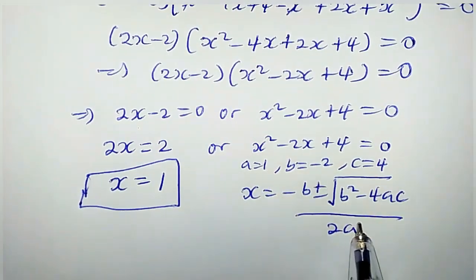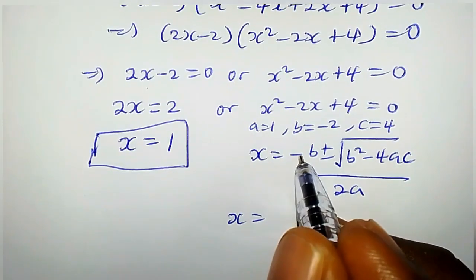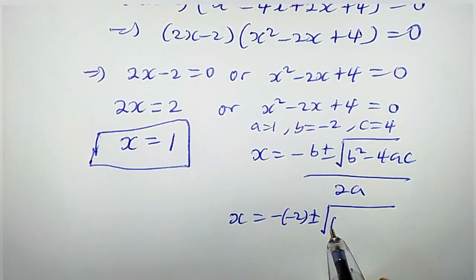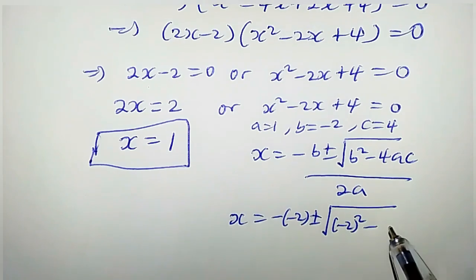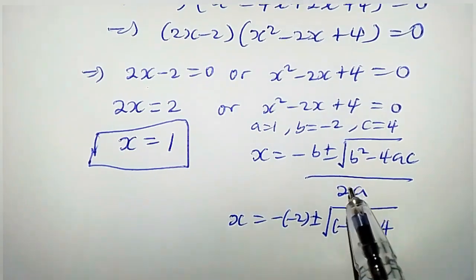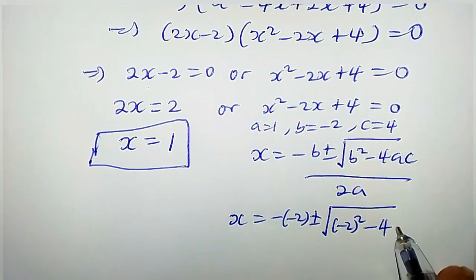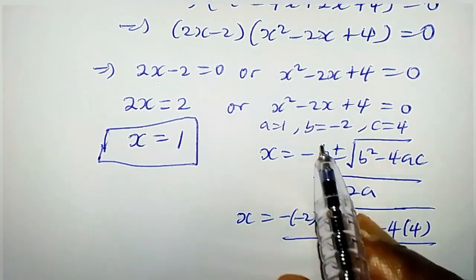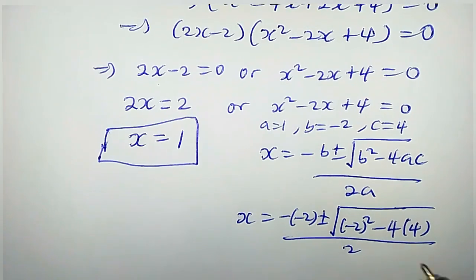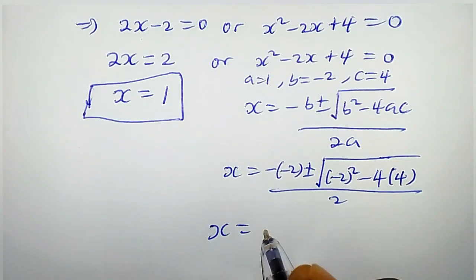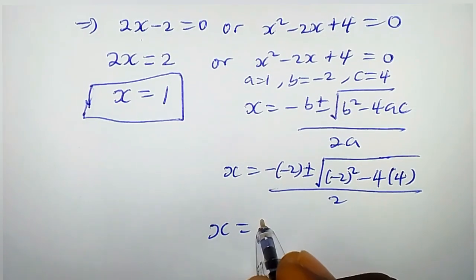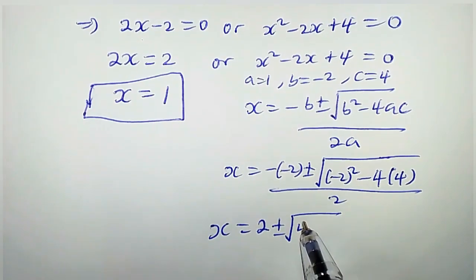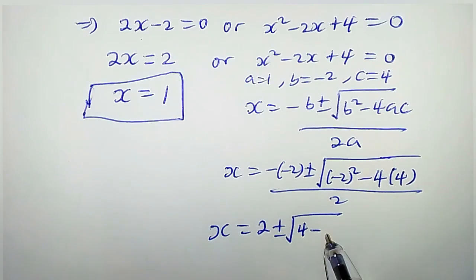So let's substitute these values. x equals negative times negative 2, plus or minus the square root of (negative 2) squared minus 4 times 1 times 4, all over 2 times 1. Simplifying: x equals 2 plus or minus the square root of 4 minus 16, over 2.